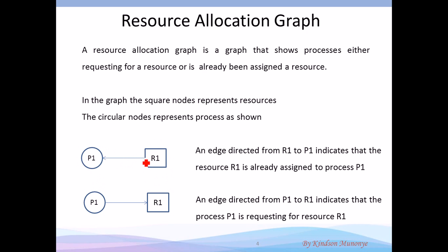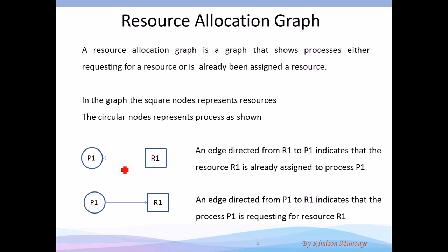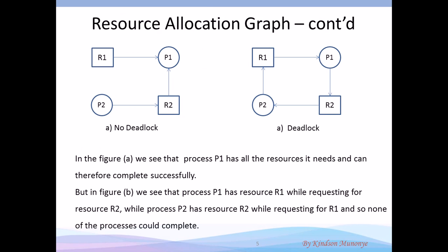The graph contains directed edges. A directed edge from a resource to a process means that this process has been assigned this resource — in other words, process one is holding resource one. An edge from process one to resource one means process one is requesting resource one. So a directed edge from resource to process means holding; from process to resource means requesting.